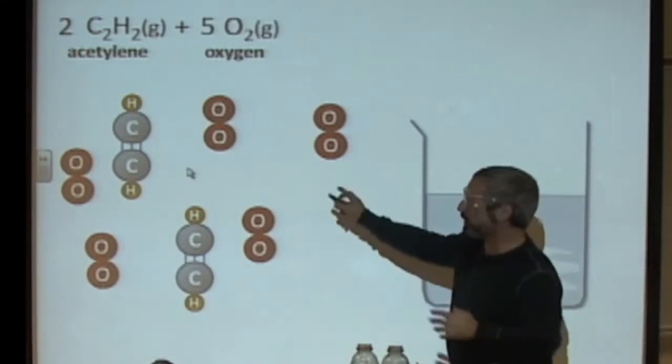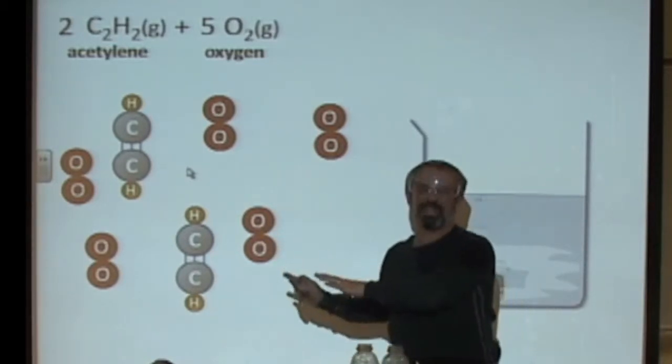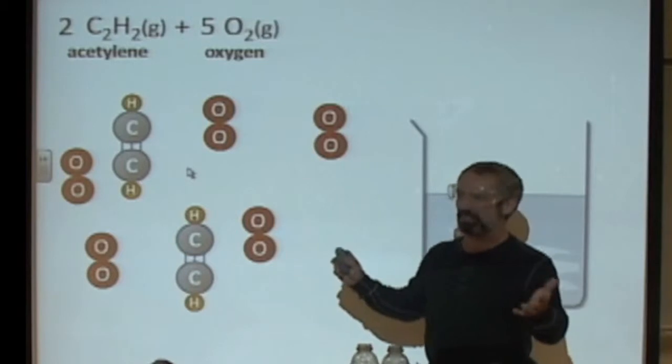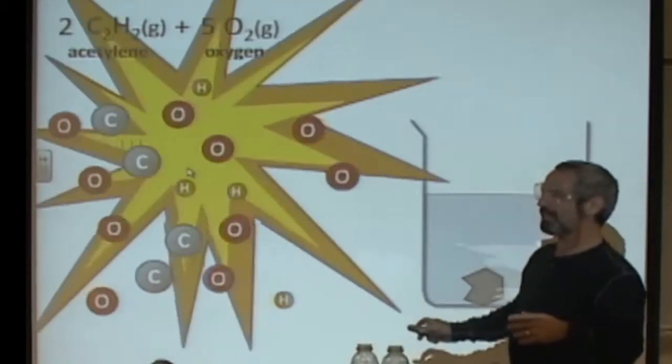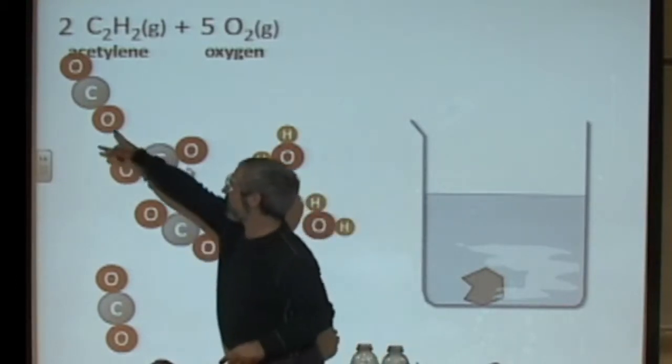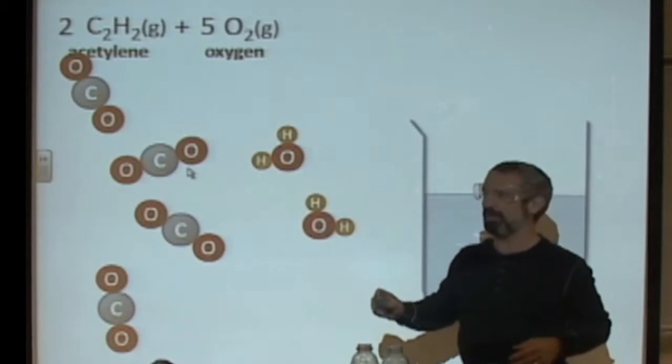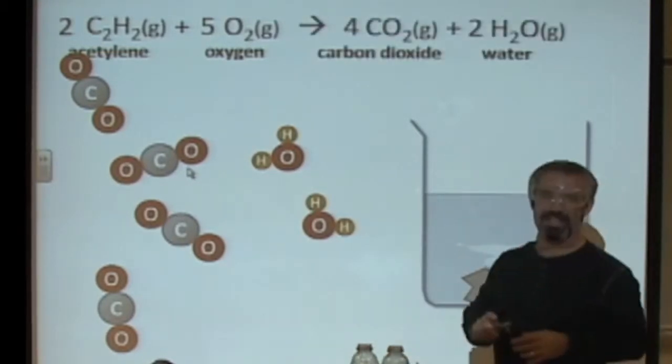When those seven molecules all collide, and again, this is an oversimplification. This is not the true reaction mechanism, but if you allow this, boom! Look what I get out of it. A total of six new molecules. Four carbon dioxide. We're familiar with those. And two water. We've seen those before.